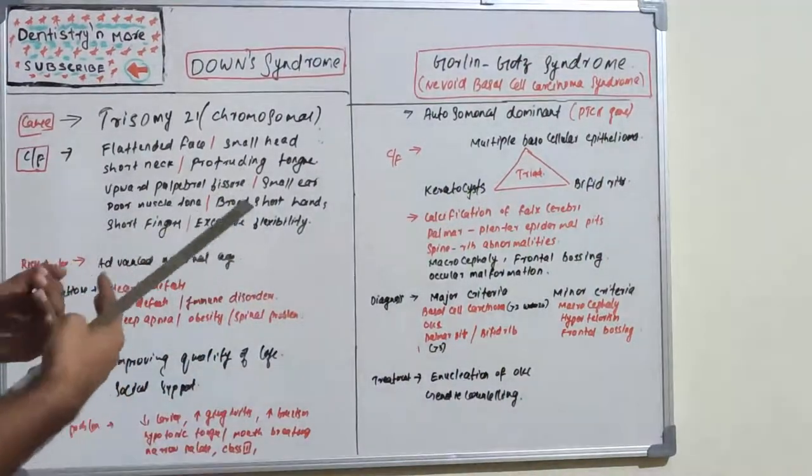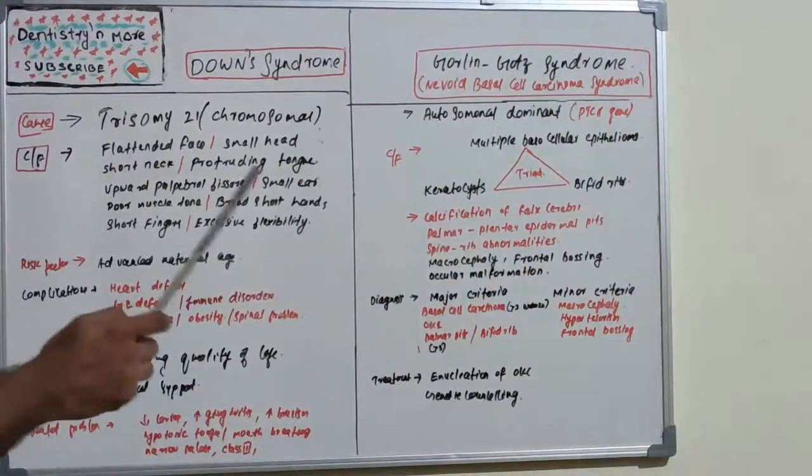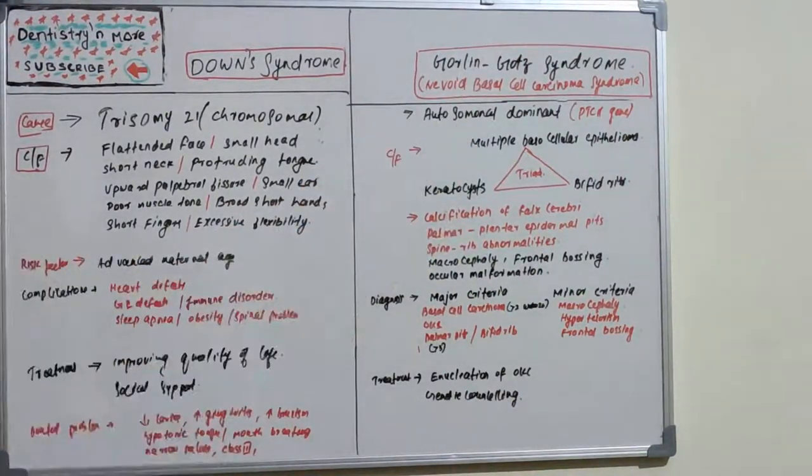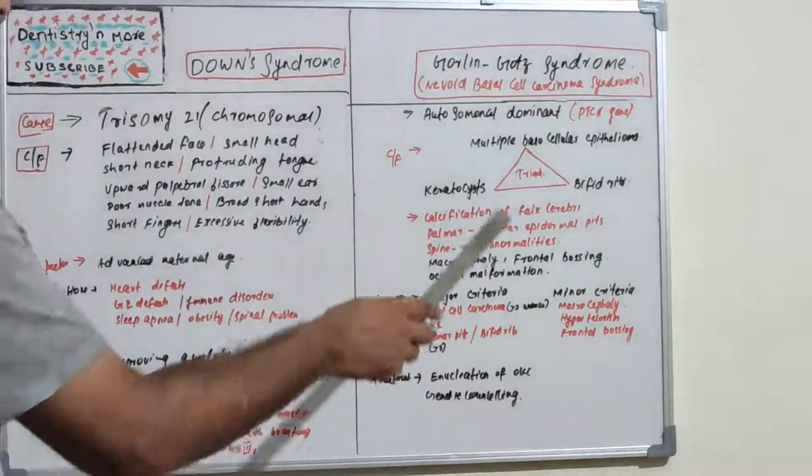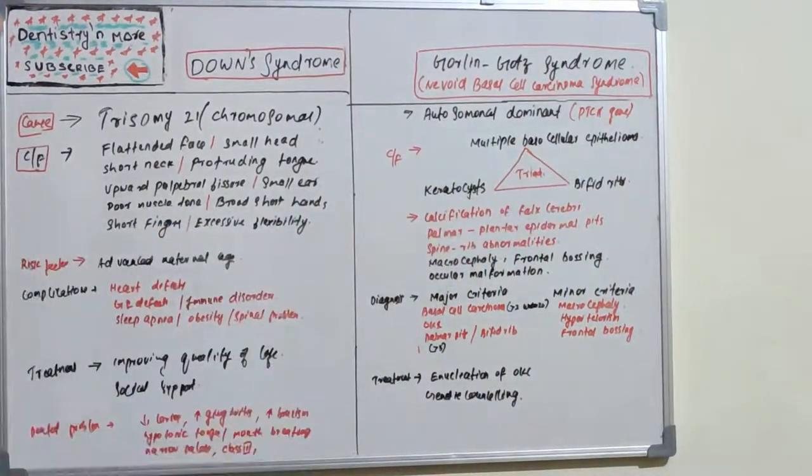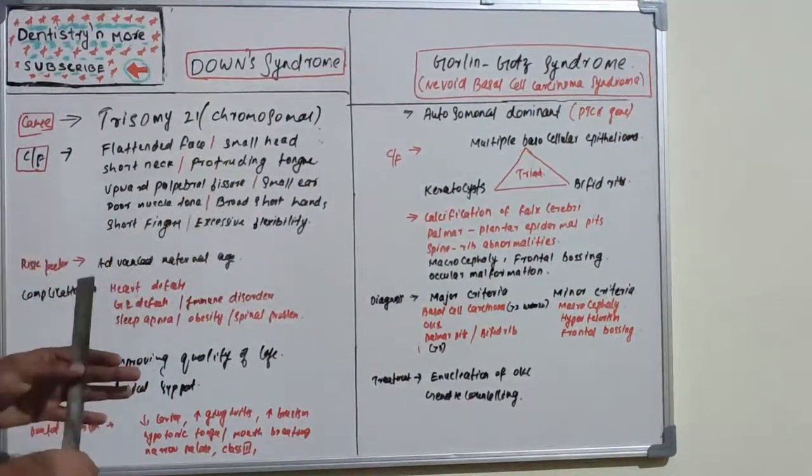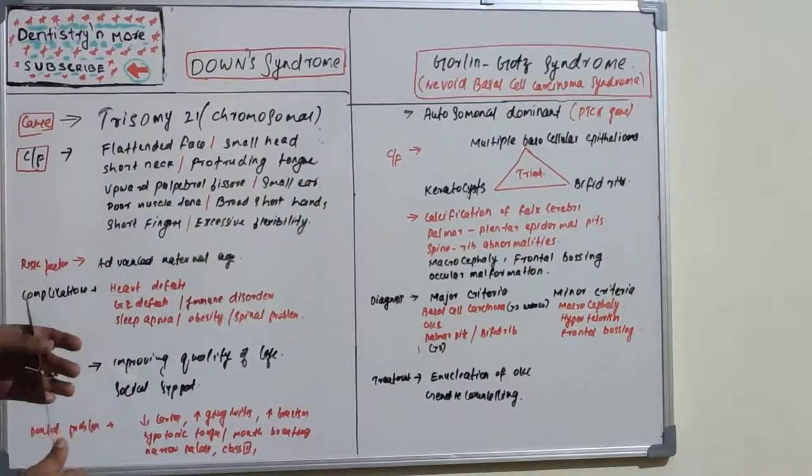There will be many keratocysts, oral keratocysts, and bifid ribs. This is the classical triad of symptoms of Gorlin-Gott syndrome: basal cell carcinoma, OKCs, and bifid ribs. There are many other clinical problems involved with this syndrome.